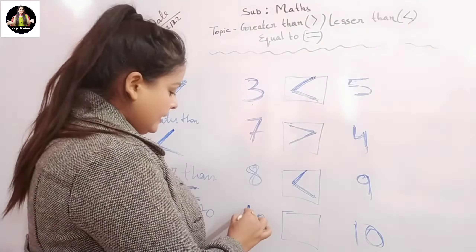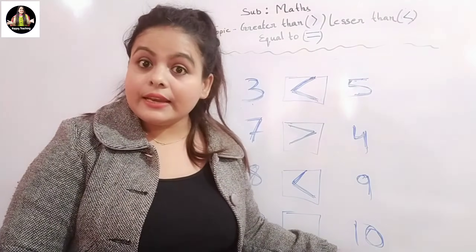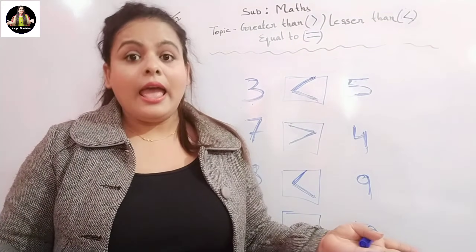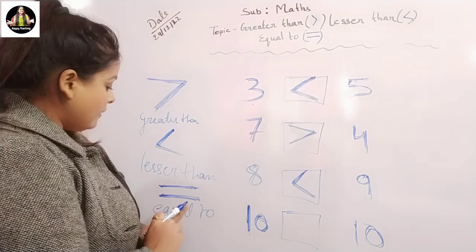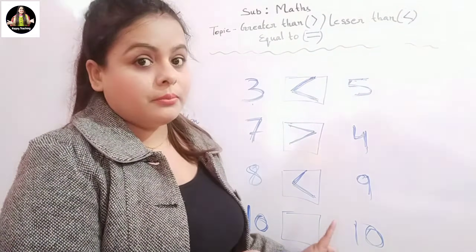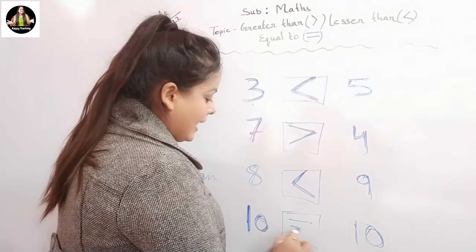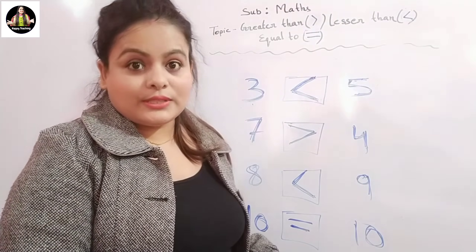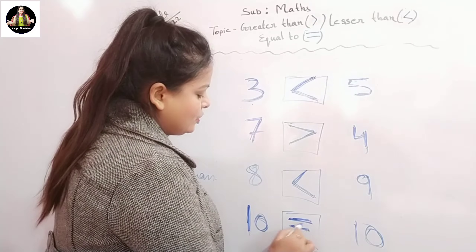Now here we have ten and this side also we have ten. Both sides we have the same number, and we have already learned that when we have the same number on both sides, we always put this sign. What is this called? The equal to sign — two sleeping lines.